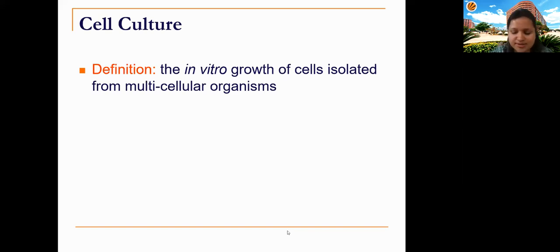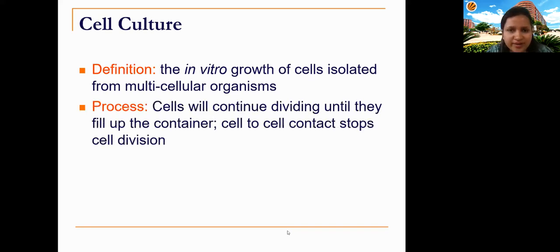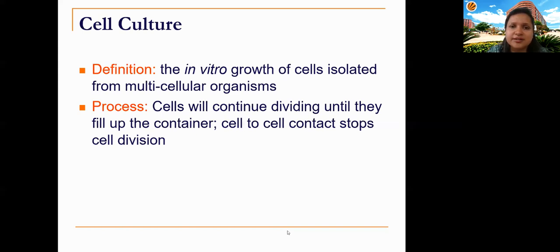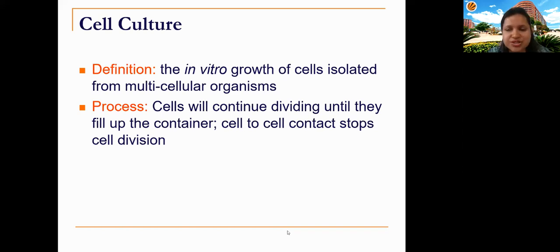Every cell in a living organism exists in an environment where it is in contact with other cells — for example, in tissues like the liver or kidney, which contain fibroblasts, keratinocytes, white blood cells, and more. This contact controls cell division. Cells divide until they come in contact with neighboring cells, at which point they undergo contact inhibition and stop growing further.